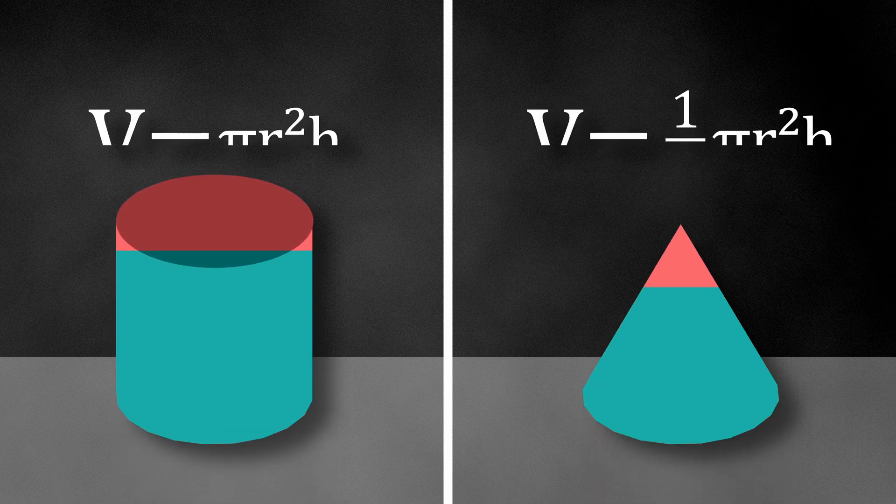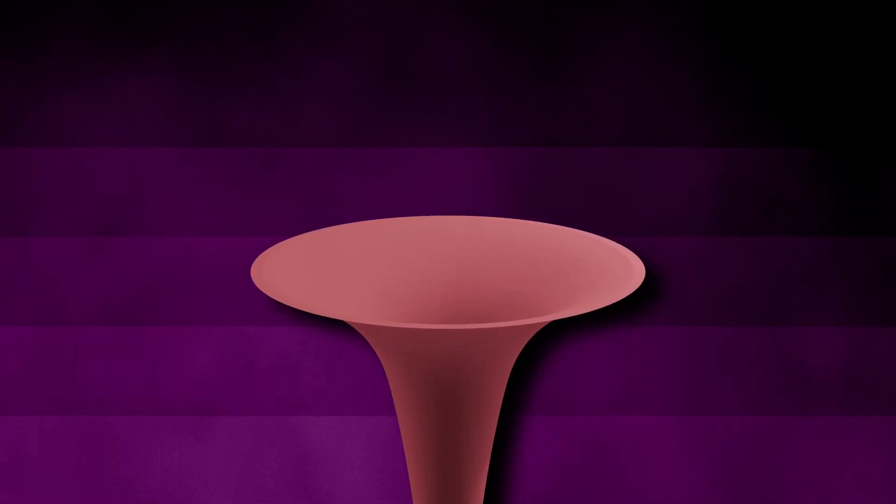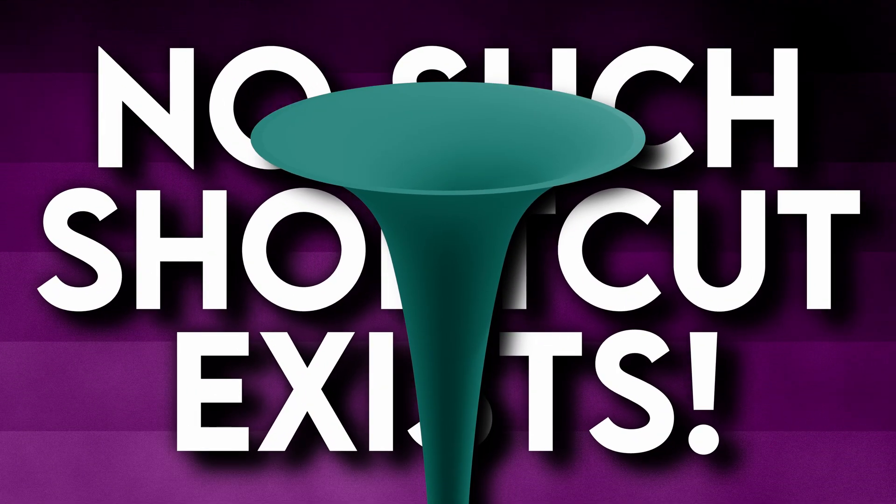For simple solids like cylinders and cones, we have well-established formulas to calculate their volumes. However, when it comes to Gabriel's horn, no such shortcut exists. We must determine its volume from scratch, using integration.